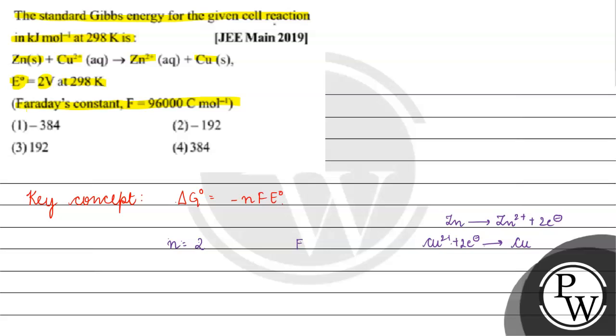n is 2. How much is E naught? E naught equals 2 volt. F, how much is it? 96,000 Coulomb per mole. Now, what do we do?